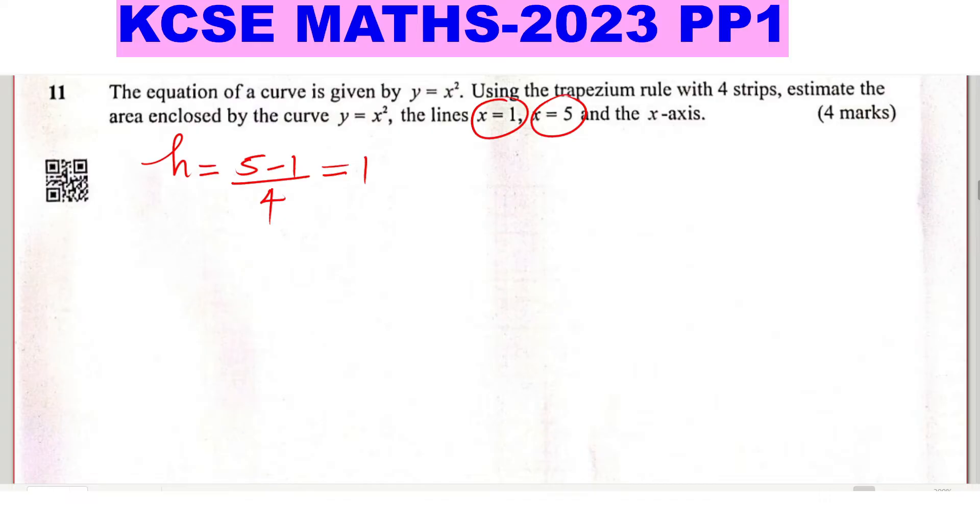Let us prepare the table of values. This is x, this is y. From 1, the height is uniform: 2, 3, 4, 5. The interval height is 1. Then from there we can use the function to get the values of y.